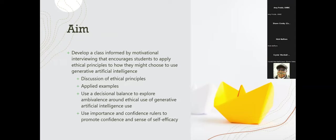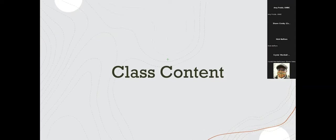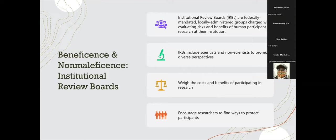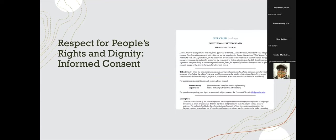All of these materials are freely available on my teaching portfolio — there will be a QR code at the end of my presentation. This is a psychological distress and disorders class that I was teaching at Goucher College. It's a small class of 24 students in a 70-minute session. Students were instructed to read before class the APA ethical code of conduct, and we started class by defining these concepts and providing examples of how they are honored in different research practices through institutional review boards and informed consent processes.